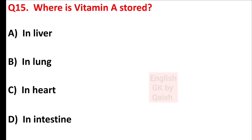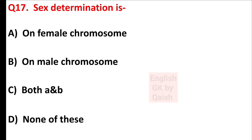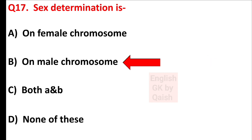Where is vitamin A stored? Answer is option A — in the liver. What is the number of chromosomes in the body? Answer is option D — 46. Sex determination is determined by — answer is option B — the male chromosome.